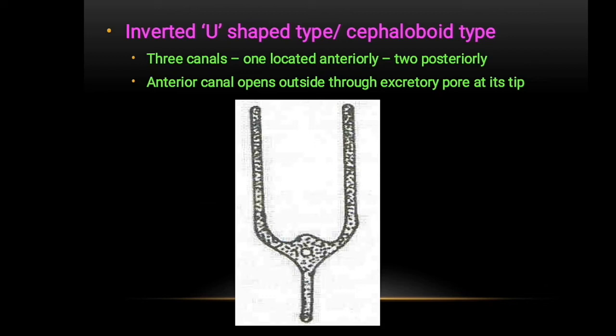Next is the inverted U-shape type, also called the cephaloboid type. Here, no excretory gland cell is present. It has three canals — one located anteriorly and two located posteriorly — with a terminal cuticular duct connected to the sinus that opens to the exterior via the excretory pore. Example: Cephalobus.